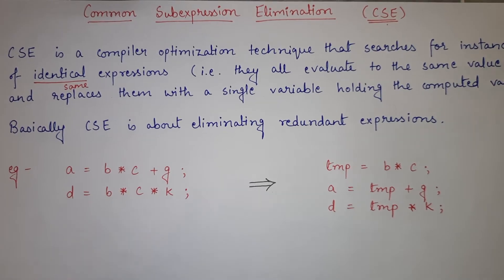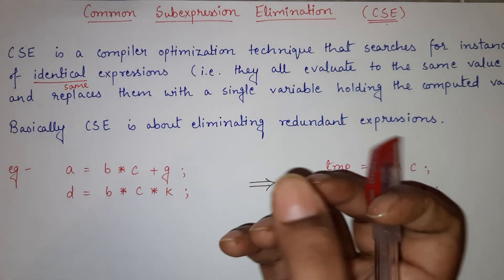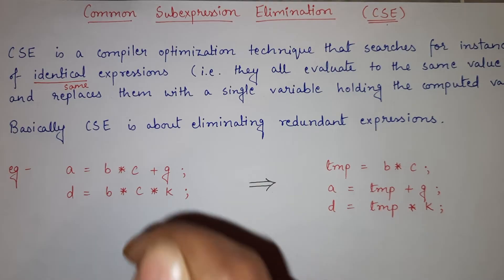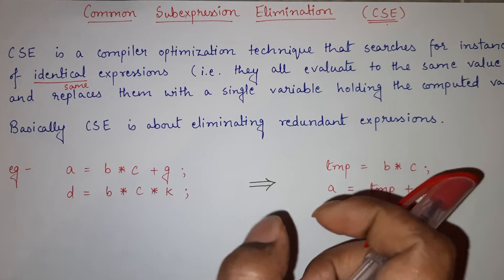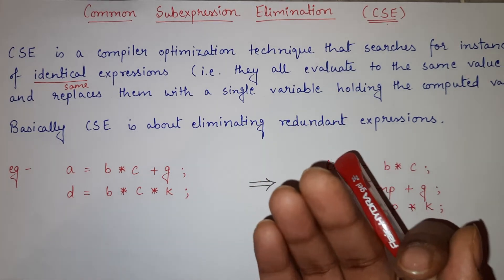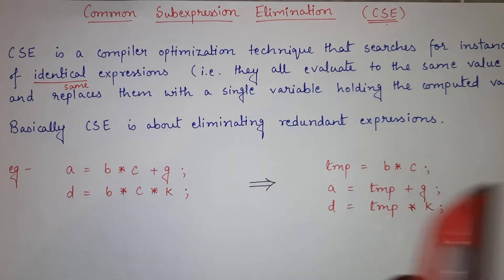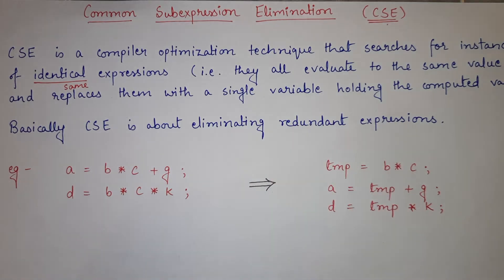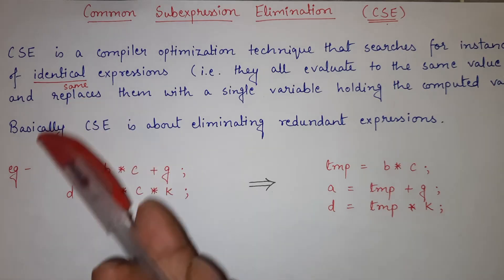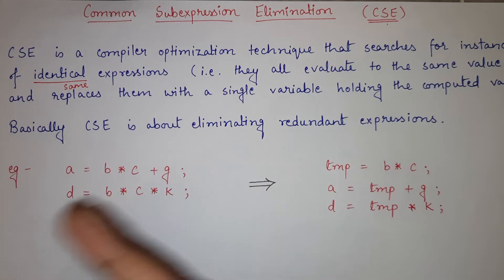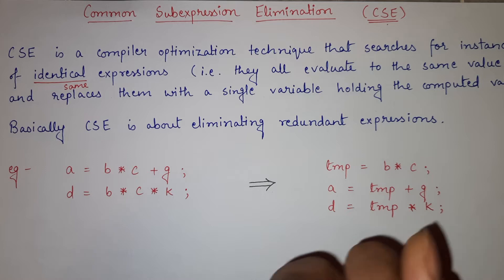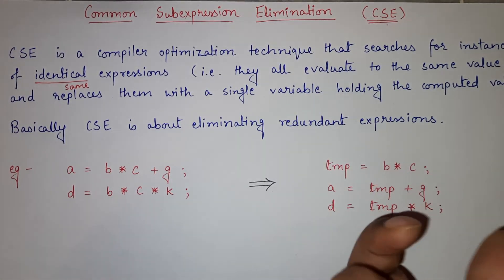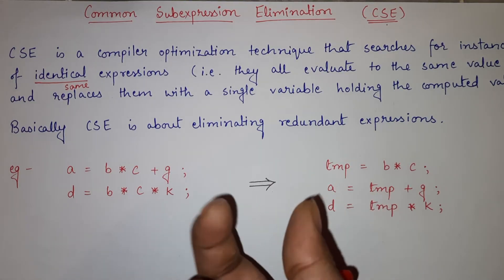In common sub-expression elimination, we look at a piece of code and find those expressions that are repeatedly written and evaluate to the same value. We find such expressions and then replace them with a single variable that holds the computed value. Basically, CSE is about eliminating redundant expressions. If any expressions are repeatedly written in many lines of code, you can eliminate them and in their place write a single variable that holds the actual value.